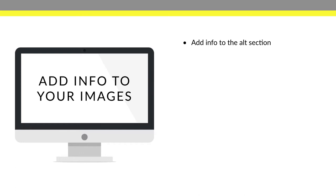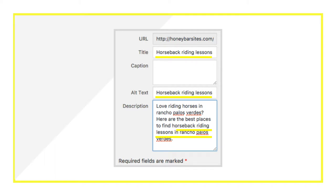You also want to add info in the alt section and description section of your images. In the WordPress back end, the alt text is what Google sees — you're basically telling Google "this is a photo about horseback riding lessons." Make sure your keyword is in the alt text and also in the description. That way, when Google crawls your site, it knows what the photo is about and where to place your post in search results.